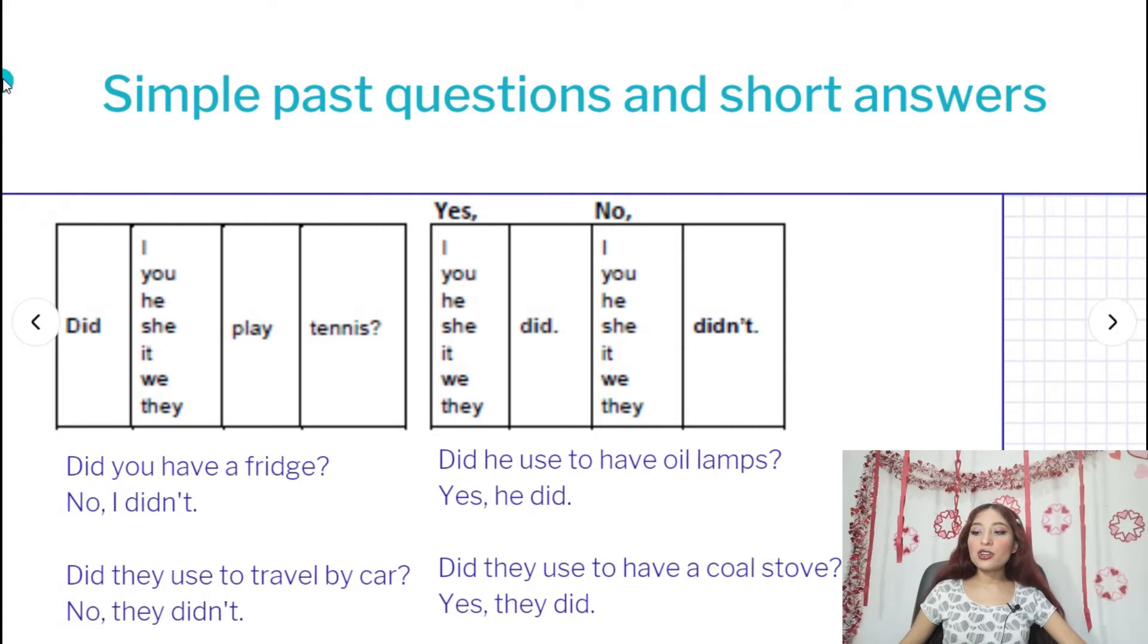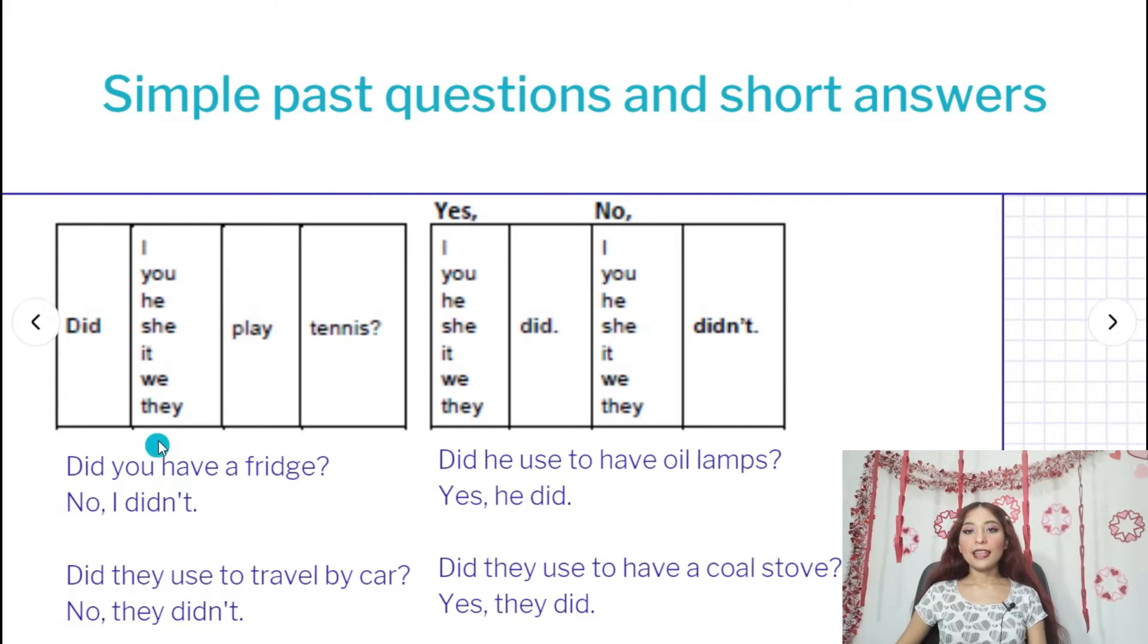So now the questions or the examples that I have for you are the next ones. They say: did you have a fridge? No, I didn't. Okay, you can see 'did,' subject, and the verb in present, and the short answer, no I didn't.